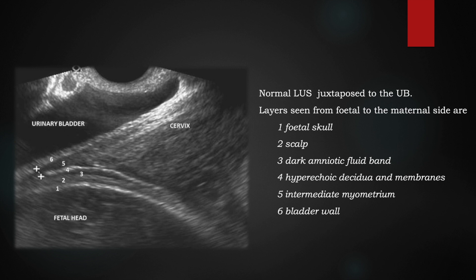When we appreciate the normal anatomy, going from the fetal side to the maternal side: point 1 is the fetal skull, 2 is the scalp, 3 is the amniotic fluid, 4 is the decidua or the membranes, 5 is the myometrium, and 6 is the urinary bladder wall. What we are measuring is the thickness of segment 5, the myometrium.